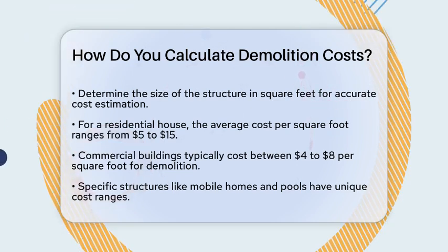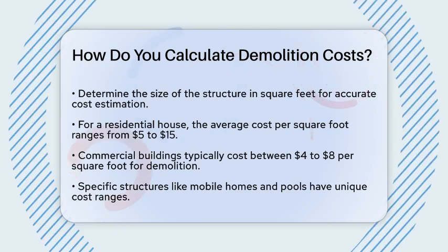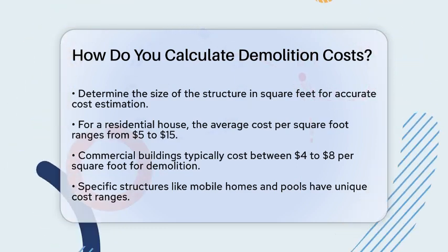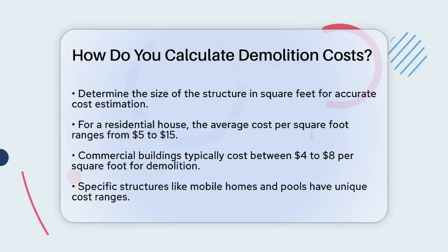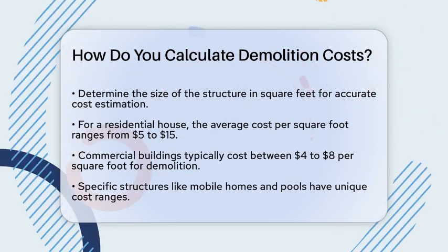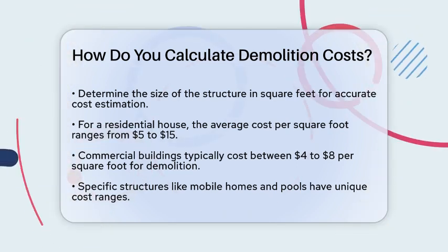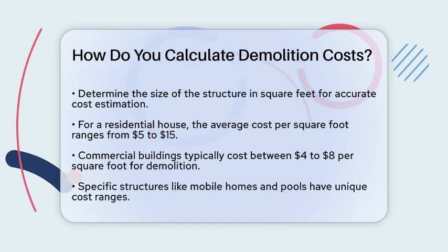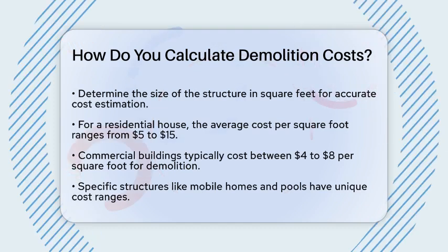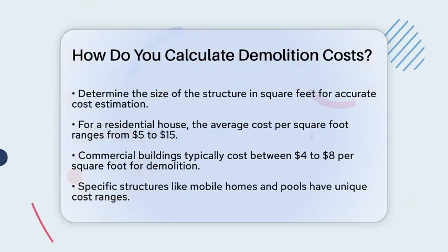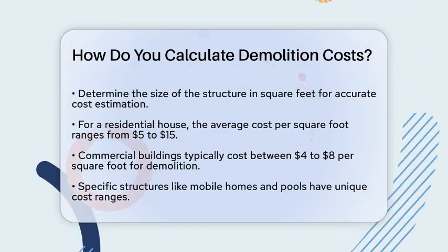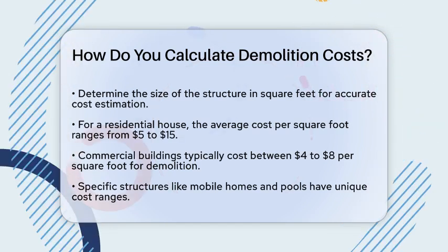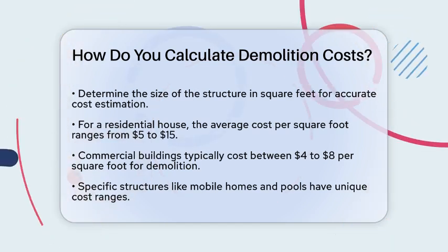Next, you need to know the average cost per square foot for the type of structure you're dealing with. For a house, this could be between $5 to $15 per square foot. For commercial buildings, it might be between $4 to $10 per square foot. Mobile homes, concrete structures, and pool demolitions have their own specific cost ranges as well.